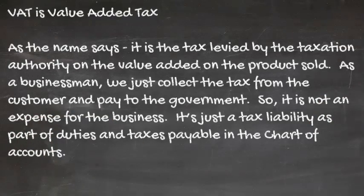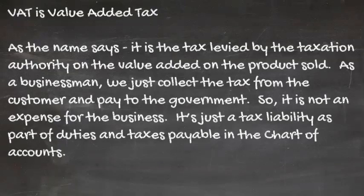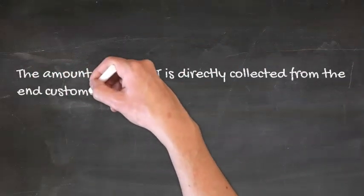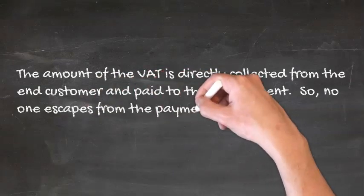Value-added tax is a tax liability of the business on the value added on the goods sold. For a better understanding, if a businessman buys goods for $1,000, sells it for $1,100, and the VAT rate is 5%, then the VAT liability of the business is only 5% of $100, that is $5. A business collects the tax and pays it to the government, so it is a personal account representing the tax authority, showing the tax due to or refund due from them. Please note this is a personal account and not an expense account. The amount of VAT is directly collected from the end customer and paid to the government, so no one escapes from the payment of VAT.